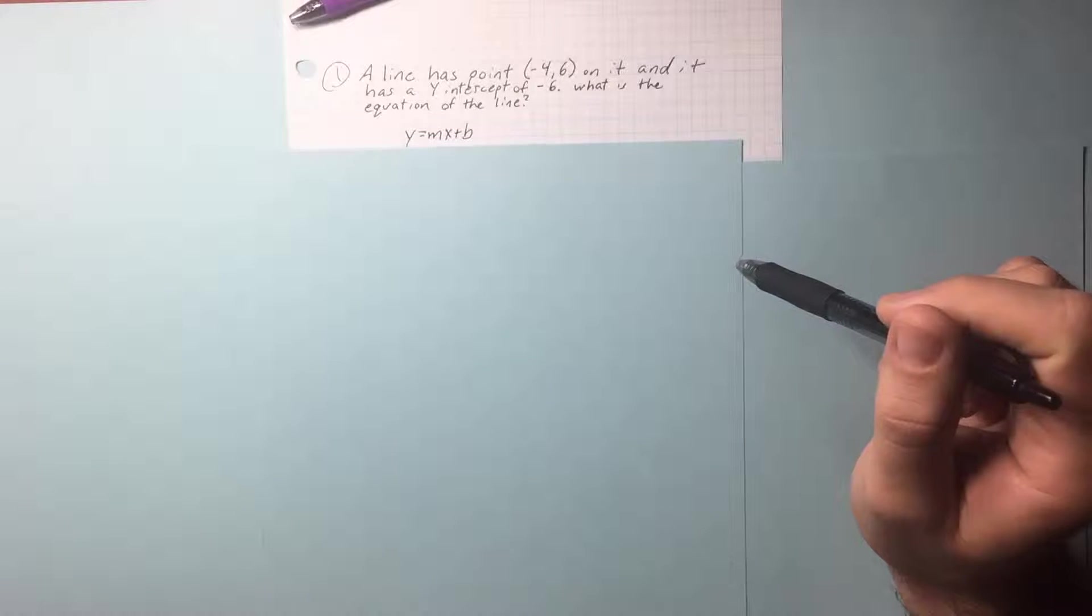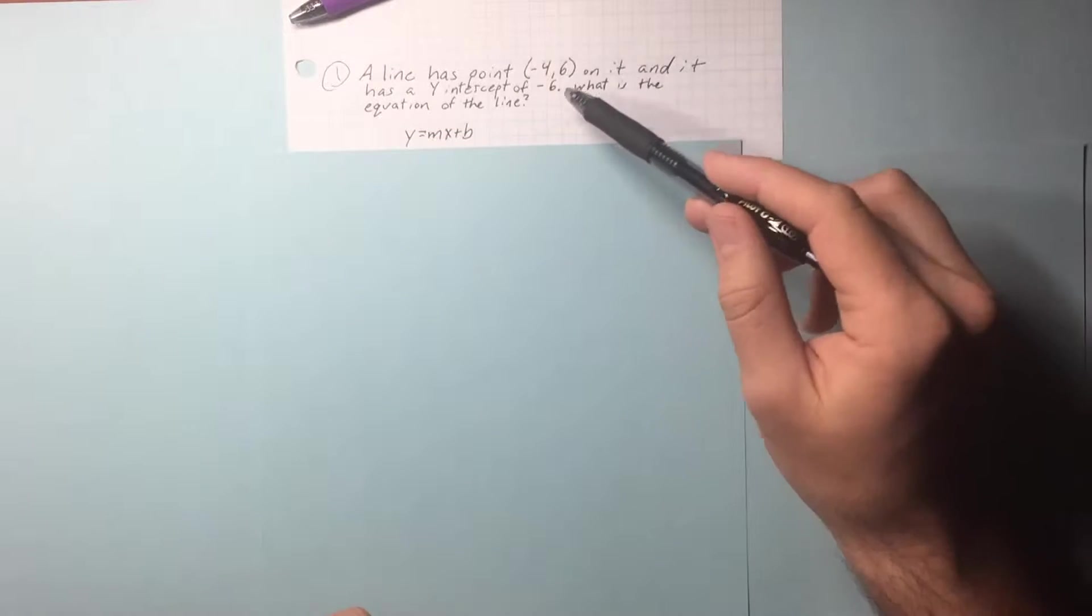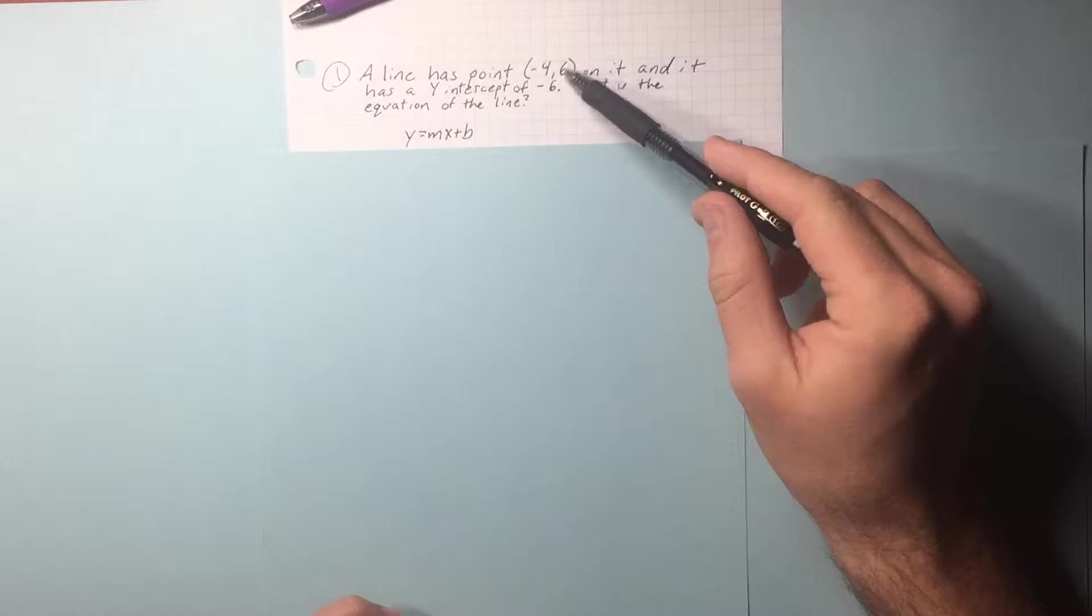What is the equation of the line? y equals mx plus b. We know the b, which is the y-intercept, and we have a point on the line.